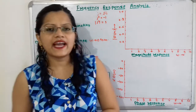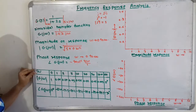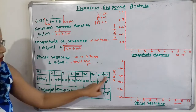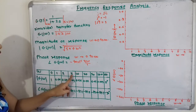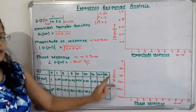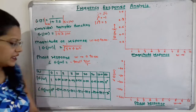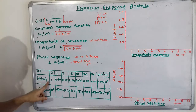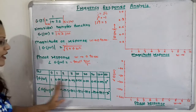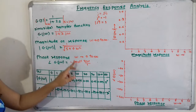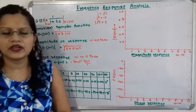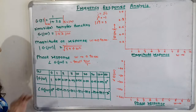We make a table for omega values varying from 0 to infinity: 0, 1, 2, 5, 10, 20, up to infinity. For each value, we calculate |G(j*omega)| and the angle of G(j*omega) by substituting into both formulas. All values have been calculated.